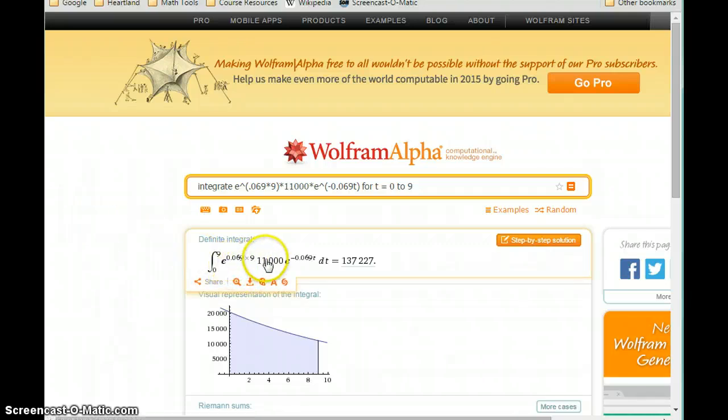Verify that our input looks like what we would expect that to look like, just to make sure that we typed everything in correctly, especially when we get into some of these more complex expressions. And we get a result of $137,227.